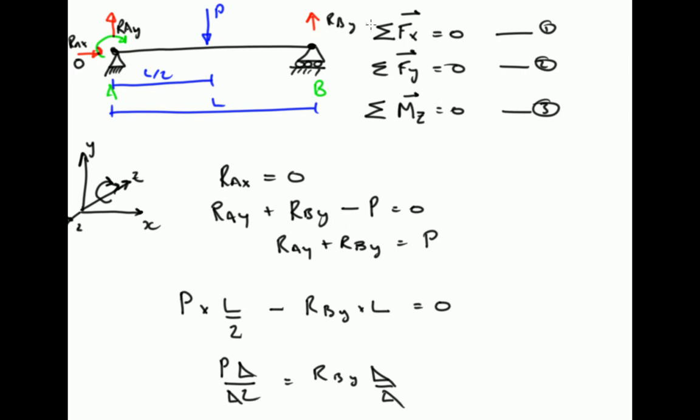So we've now solved for this unknown, R_By, and that equals P divided by 2. We can now substitute R_By equals P divided by 2 into this equation. So we can now say that R_Ay plus P divided by 2 equals P. Therefore, if we subtract P divided by 2 from each side, R_Ay equals P minus P divided by 2, which equals half P, or P divided by 2.